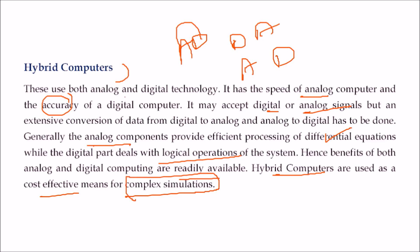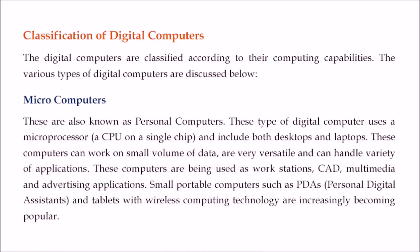Now, the classification of digital computers according to their computing capabilities. First are micro computers, also known as PCs or personal computers. These digital computers use a microprocessor — that is, a CPU on a single chip. Desktop and laptop computers are all micro computers.